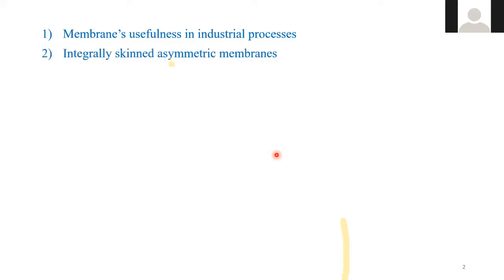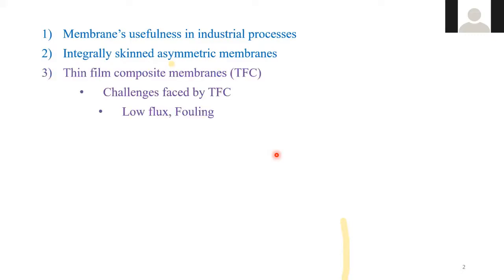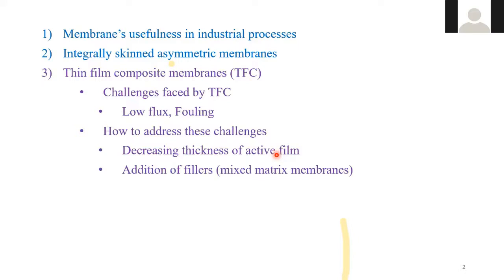We will first discuss the usefulness of membranes in industrial processes, then integrally skinned asymmetric membranes and thin film composite membranes. Frankly, I was surprised that not too many people in Pakistan are working on thin film composite membranes, as they present many opportunities. These membranes have challenges such as low flux and fouling, which can be addressed by decreasing thickness, adding fillers, or using mixed matrix membranes.